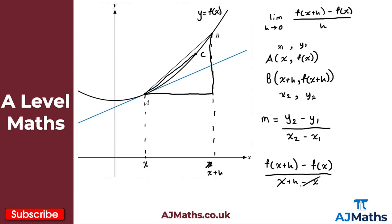Once we simplify the denominator, the x cancels with minus x and we're left with h. This result — f(x+h) minus f(x) over h — is essentially the same as the differentiation from first principles formula. The only difference is the limit. The limit gives us the behaviour as we keep getting closer to point A: as h tends to zero, we get the gradient at that point.